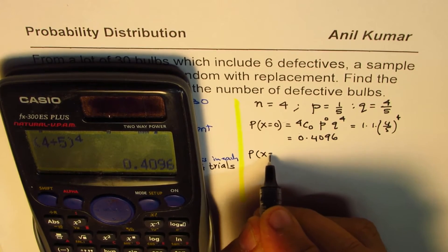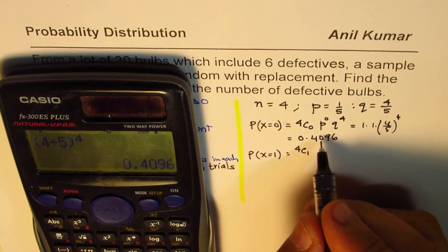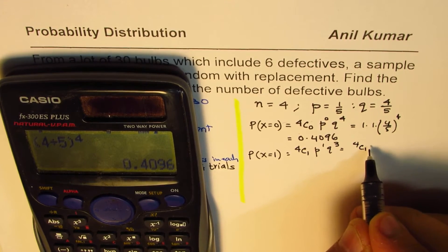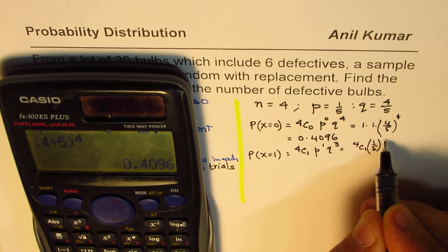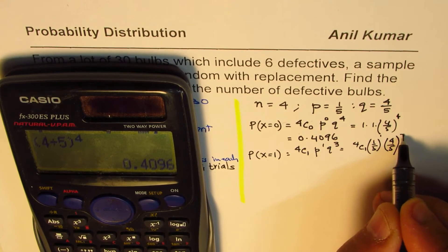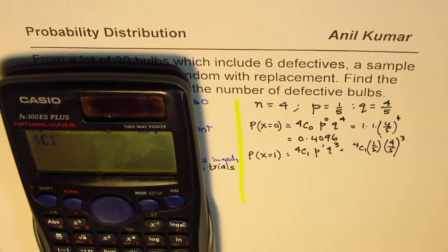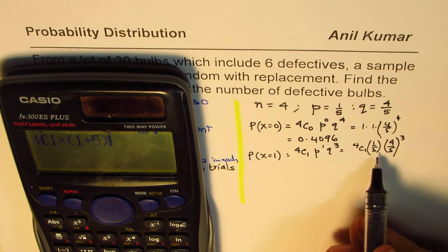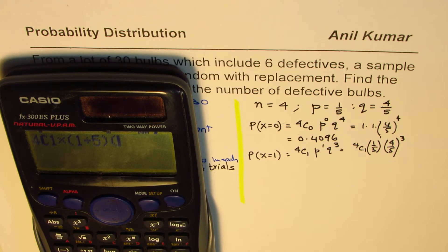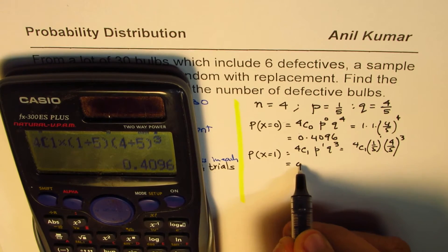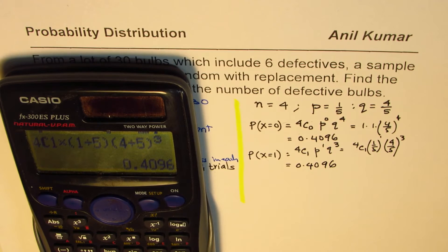Now let's calculate the probability for X equals 1. That is 4C1 × P^1 × Q^3, or 4C1 × (1/5)^1 × (4/5)^3. The powers add up to 4. That gives us a decimal value of 0.4096.